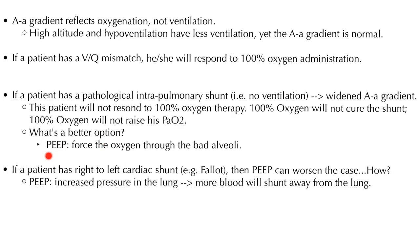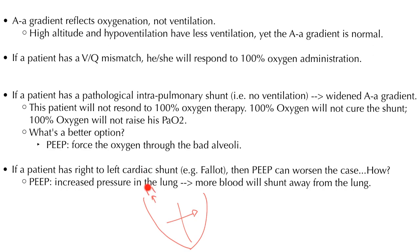Is there a better option? Yes — PEEP, positive end-expiratory pressure, to force oxygen through the bad alveoli. But here's a caveat: if a patient has a right-to-left cardiac shunt such as tetralogy of Fallot, PEEP can worsen the case. PEEP increases pressure in the pulmonary circulation, making it harder for blood to flow the right way into the lungs from the right side of the heart. Most of the blood will then shunt to the other side, worsening the shunt. You're part of the problem if you give PEEP to a patient with a right-to-left cardiac shunt. You want to increase pressure on the left side to decrease the shunt.